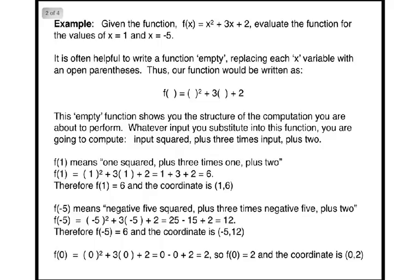For example, f(1) means 1 squared plus 3 times 1 plus 2. You'd write it out officially as f(1), meaning evaluate the function for the input value of 1. It equals 1² + 3(1) + 2, which is 1 + 3 + 2, which is 6. Therefore, f(1) = 6, and the coordinate is (1, 6).